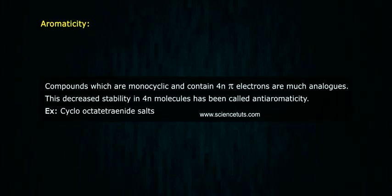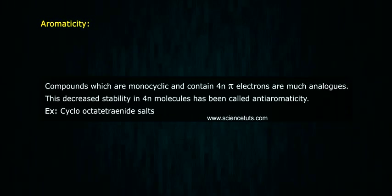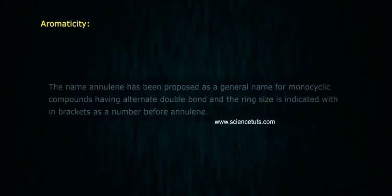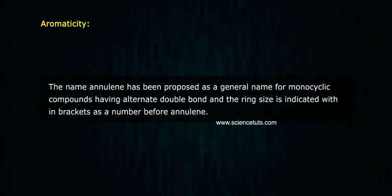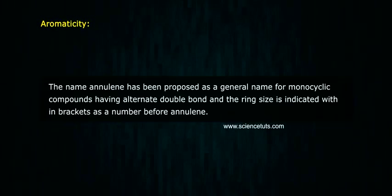Compounds which are monocyclic and contain 4n pi electrons exhibit decreased stability. This decreased stability in 4n molecules has been called anti-aromaticity. The name annulene has been proposed as a general name for monocyclic compounds having alternate double bonds, with the ring size indicated within brackets before annulene.